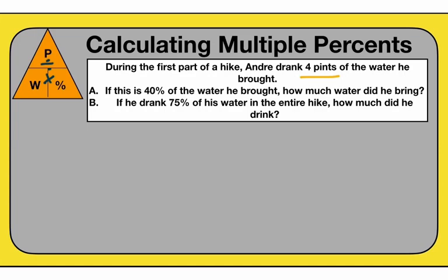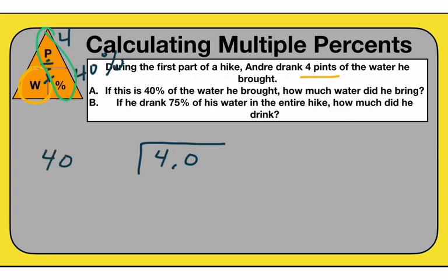Let's solve A first. We know four is the part — Andre drank four pints of the water he brought during the first part of the hike. 40% is the percent. So we're solving for the whole — we need to figure out how much total water Andre brought. We're going to do the part divided by the percent: 4.0 divided by 40%. We've got to bring the percent back two spaces, so it's dividing by 0.40. We've got to move the decimal point when we divide, which means moving it two spaces there too. So I have 400, and now it's: what is 400 divided by 40?